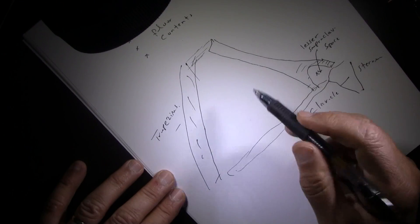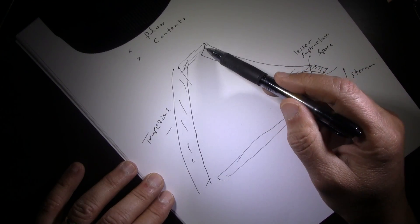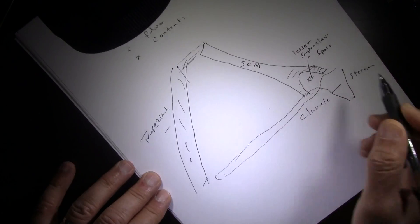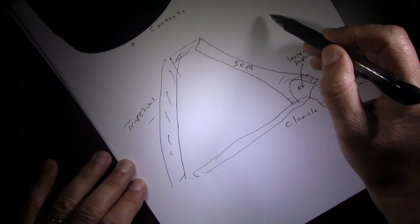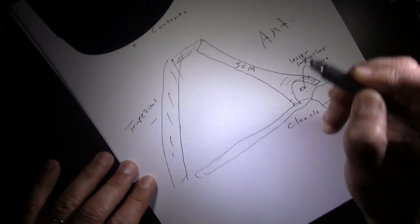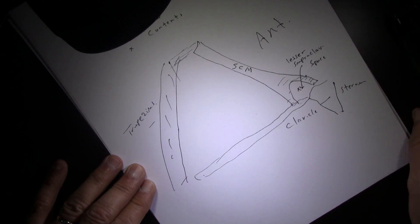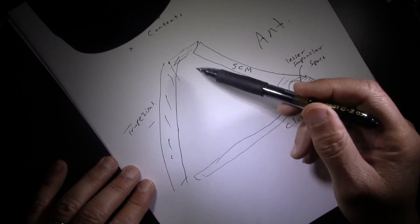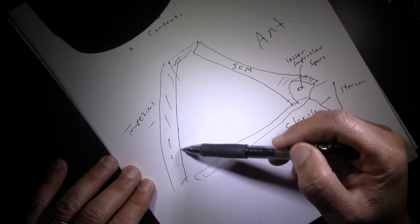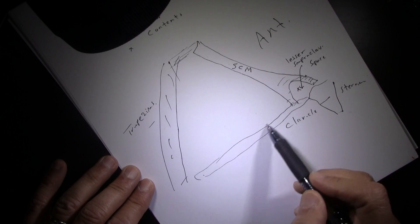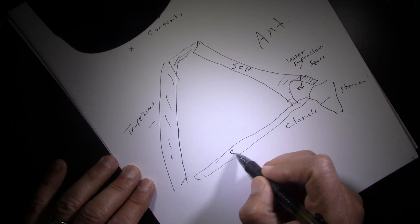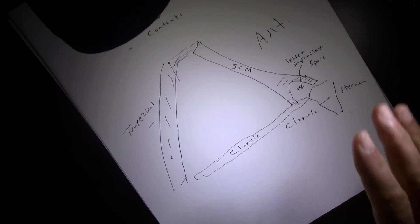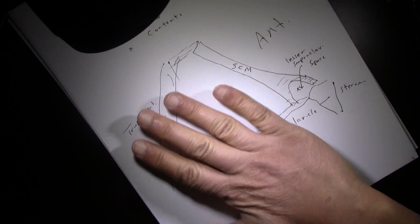The sternocleidomastoid muscle divides the neck into the anterior triangle and the posterior triangle. The boundaries are: anteriorly, the posterior border of sternocleidomastoid; posteriorly, the anterior border of trapezius; and at the base, the clavicle.